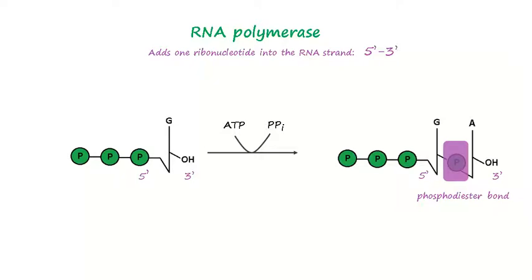The formula for this reaction is: RNA with a specific number of ribonucleotides plus a ribonucleotide triphosphate will give RNA with one ribonucleotide more and an inorganic pyrophosphate.